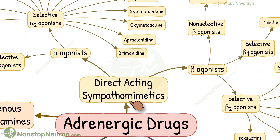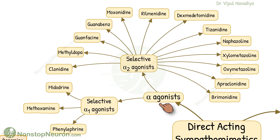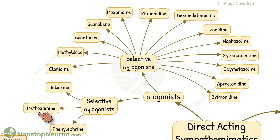Direct-acting sympathomimetic drugs are divided into alpha-agonists and beta-agonists. Among alpha-agonists, we have selective alpha-1-agonists: phenylephrine, methoxamine, and midodrine.